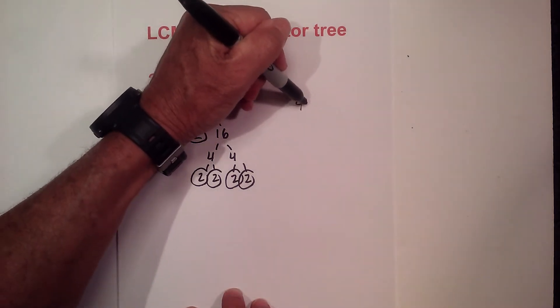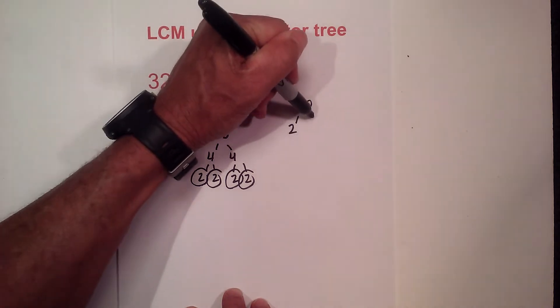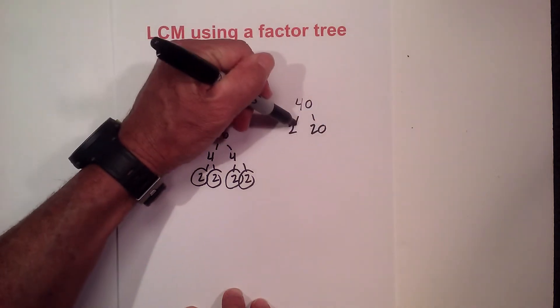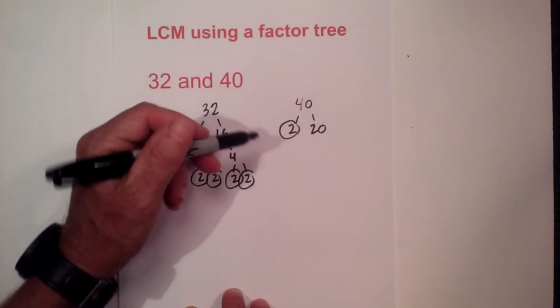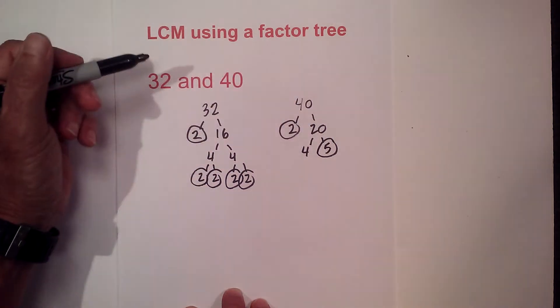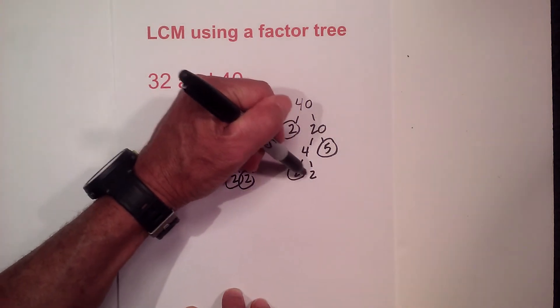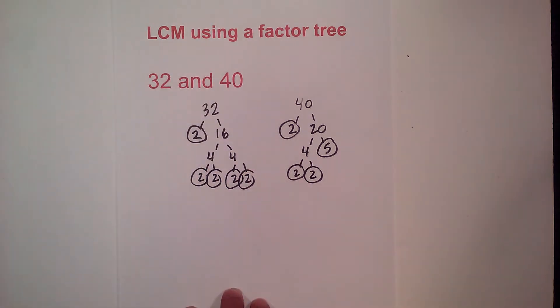Now for 40 why don't we start with 2 times 20. Circle the 2 because it is prime. Now 4 times 5 equals 20. Circle the 5 because it is prime. And then 2 times 2. And we are down to prime numbers.